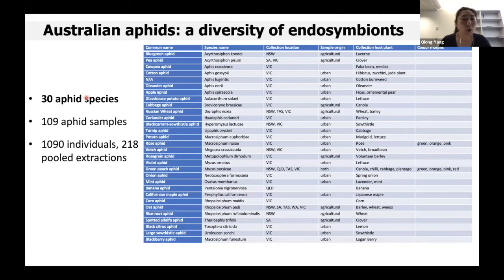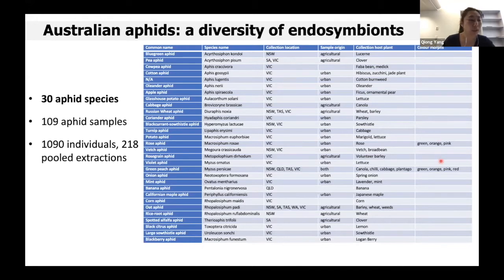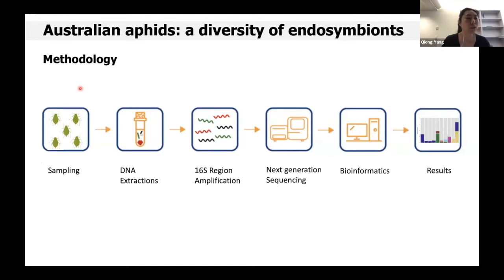For most of those 30 aphid species, we did multiple sampling across a wide geographic range, a wide range of host plants, and different color morphs. In total, we screened 109 aphid populations so far using 16S metabarcoding. Five individuals were pooled together for DNA extraction. Metabarcoding targeted the 16S rRNA gene and was carried out by the sequencing company Novogene. Sequence analysis was performed using a standard QIIME II pipeline.